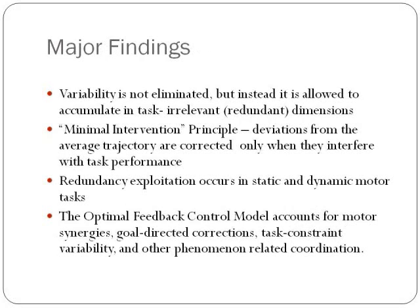The major findings of the paper are as follows. First, variability in almost all the experiments was not eliminated, but instead allowed to accumulate in task-irrelevant, redundant dimensions. Second, the minimal intervention principle was discovered: deviations from the average trajectory are corrected only when they interfere with task performance. Additionally, redundancy exploitation occurs in both static and dynamic motor tasks. Finally, the optimal feedback control model accounts for motor synergies, goal-directed corrections, task-constrained variability, and other phenomena related to coordination.